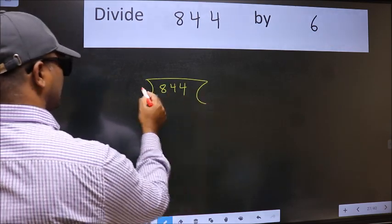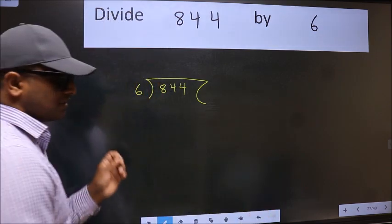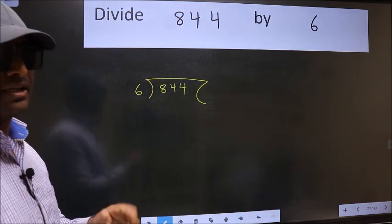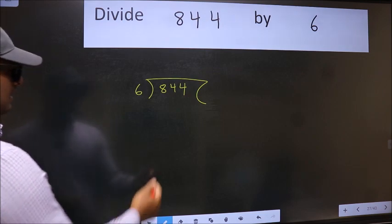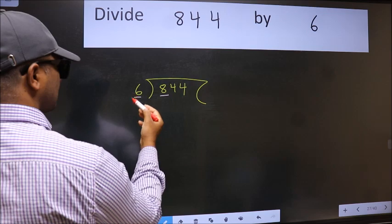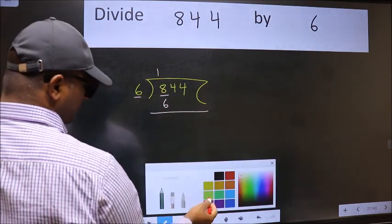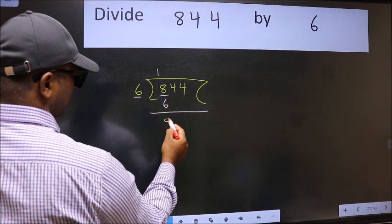844, 6 here. This is your step 1. Next, here we have 8 and here 6. A number close to 8 in 6 table is 6×1=6. Now we should subtract. We get 2.